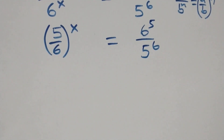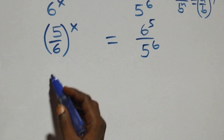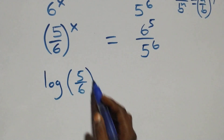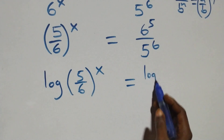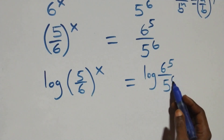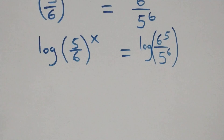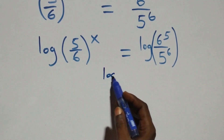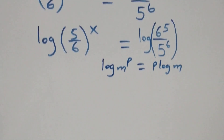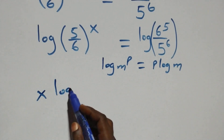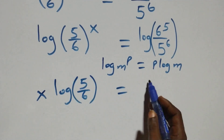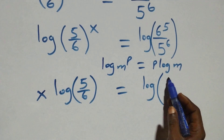Our next step is to take the log of both sides. This becomes log of (5 over 6) all raised to power x, equals log of (6 raised to power 5 over 5 raised to power 6). Then from here we apply the power rule of logarithms: log of m raised to power p is the same thing as p times log m. So x times log(5 over 6) equals log of (6 raised to power 5 over 5 raised to power 6).